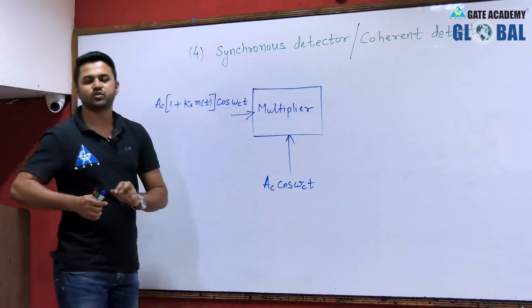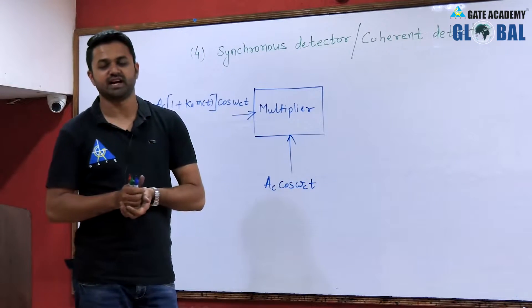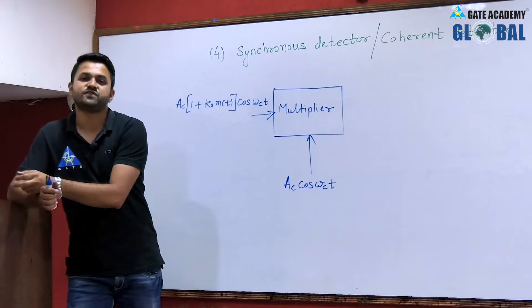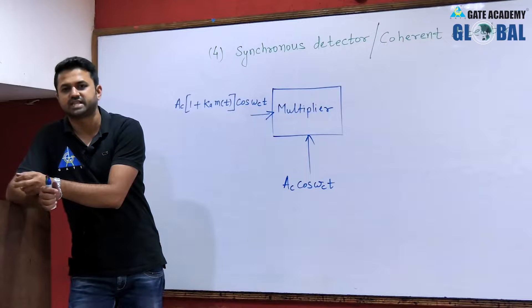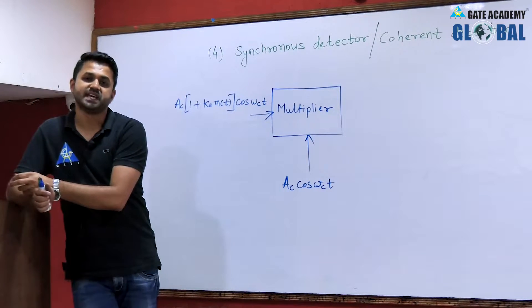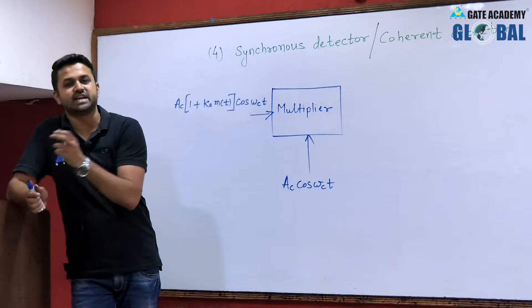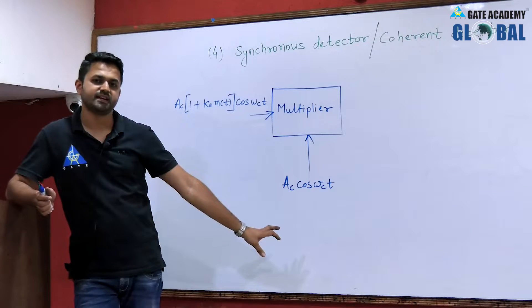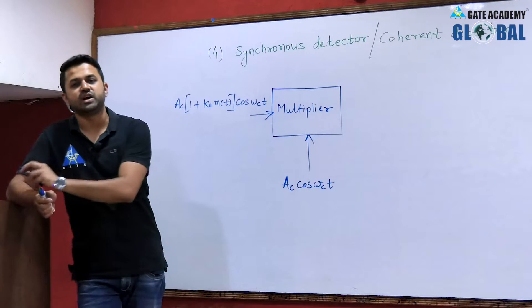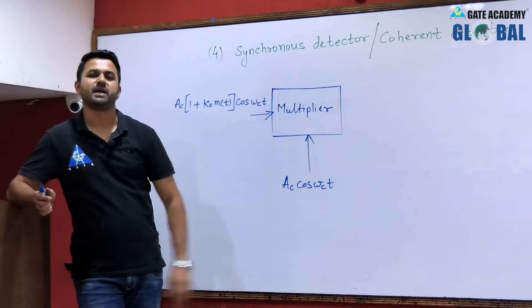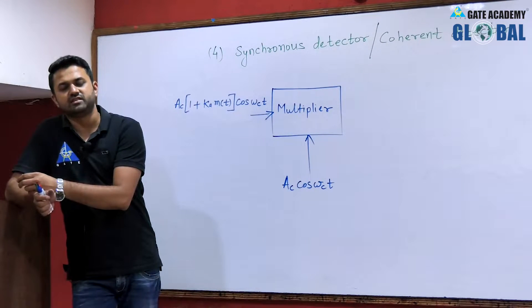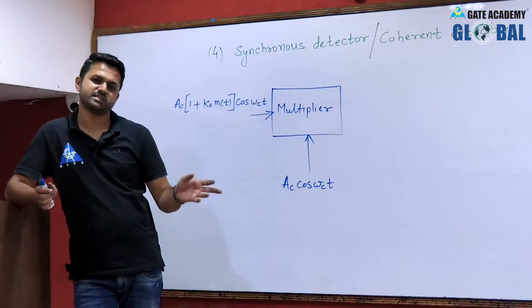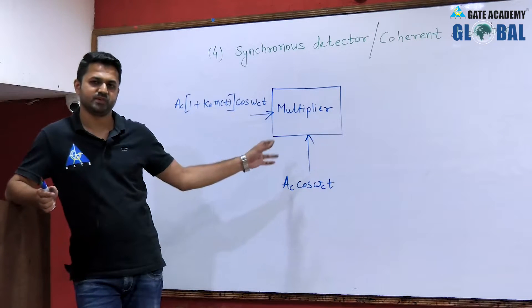We call it 'Synchronous' because we have to synchronize the carrier frequency and phase with the carrier frequency and phase of the transmitter. Whatever carrier is used at the transmitter side, the same carrier with the same frequency and phase must be generated locally at the receiver using a local oscillator and given as input to the multiplier.